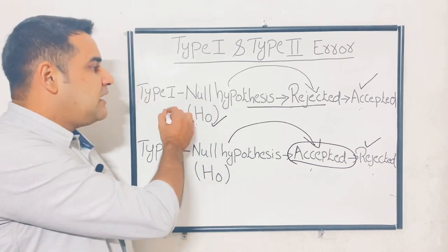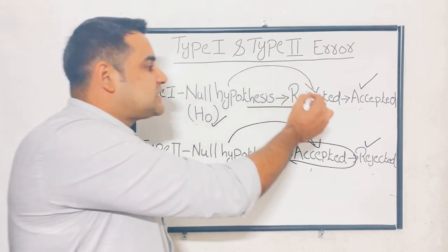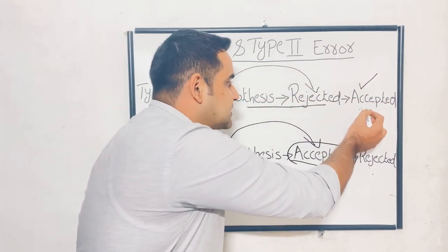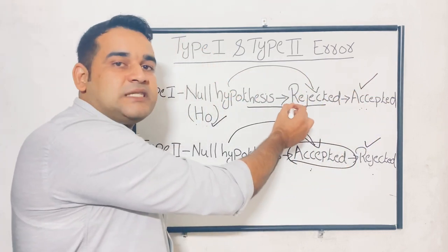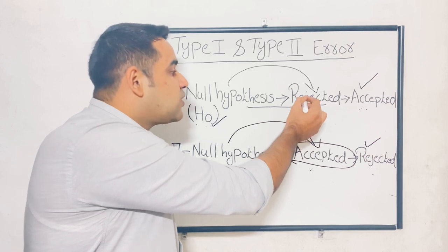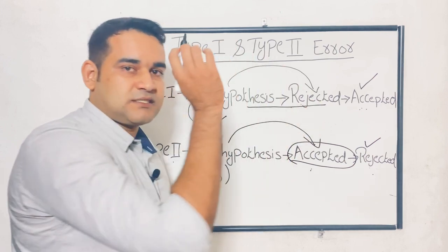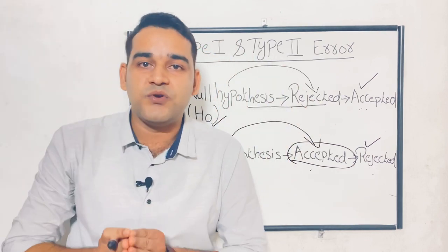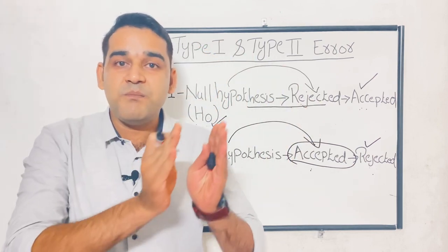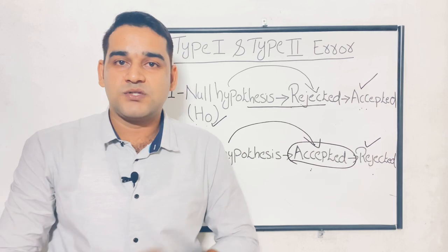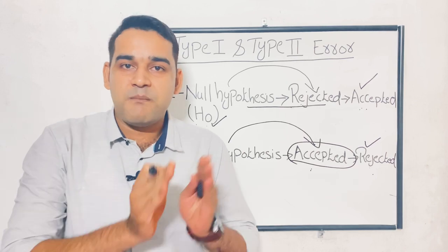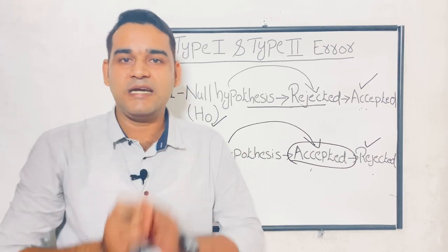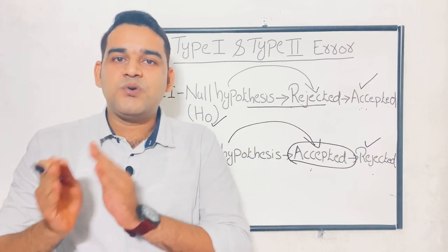In type 1 error, the right decision is to accept the null hypothesis, but by mistake you rejected it. Now I will give you a simple example so you will get a better idea regarding type 1 and type 2 error.